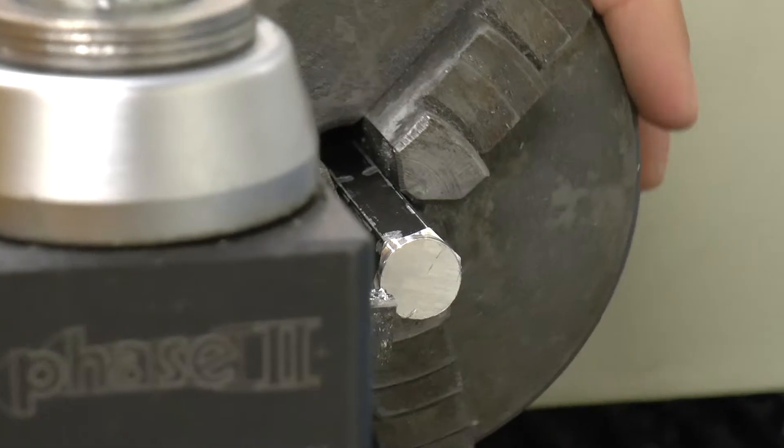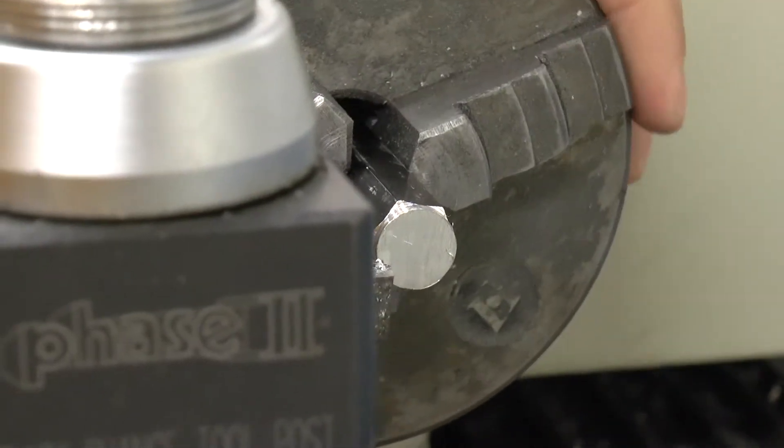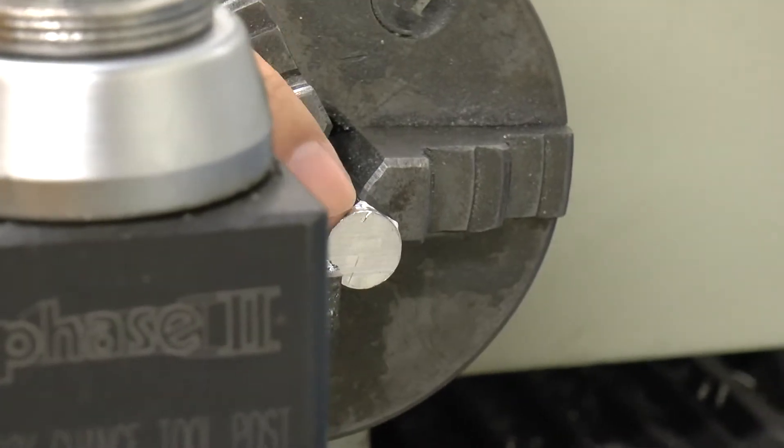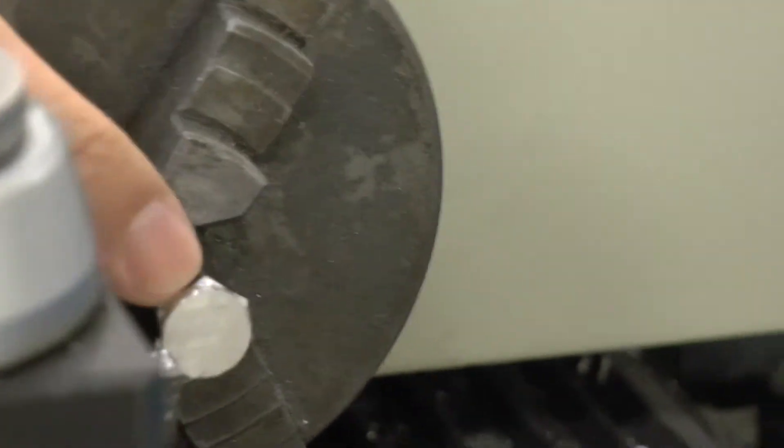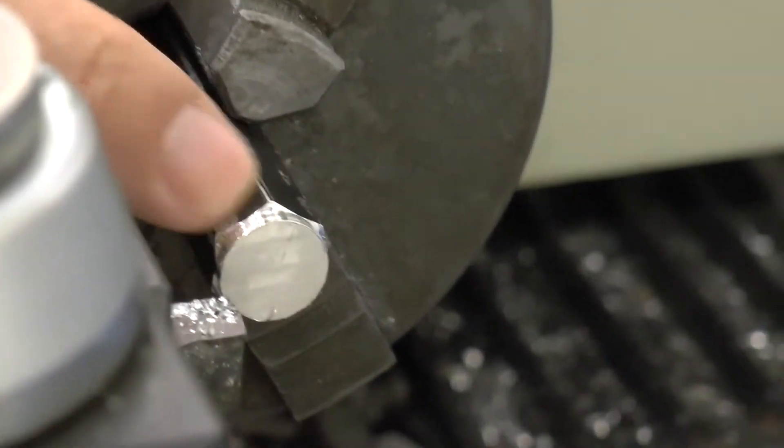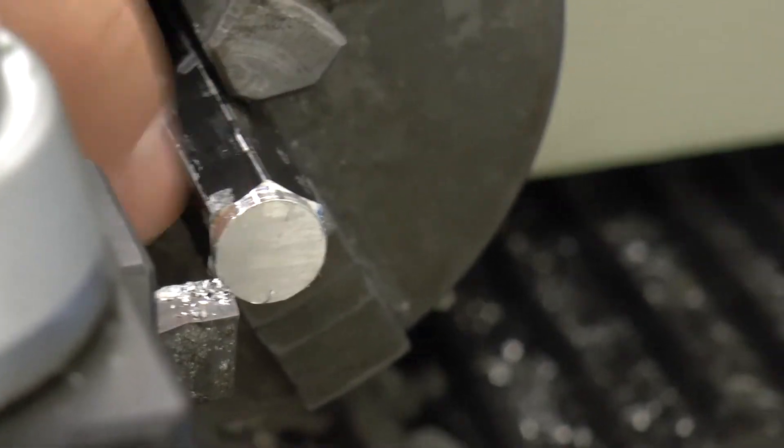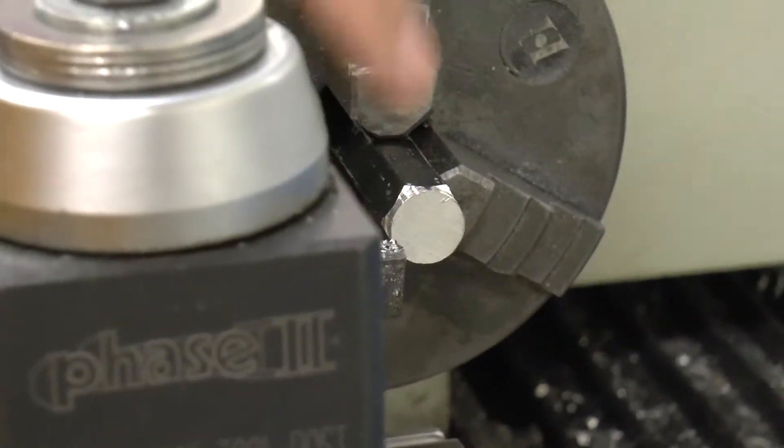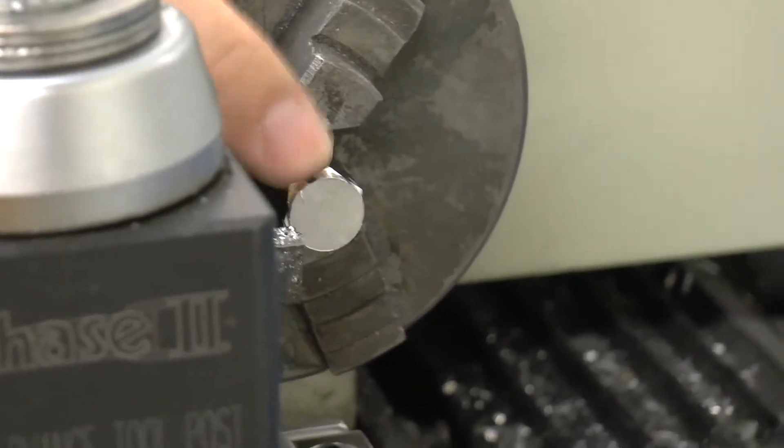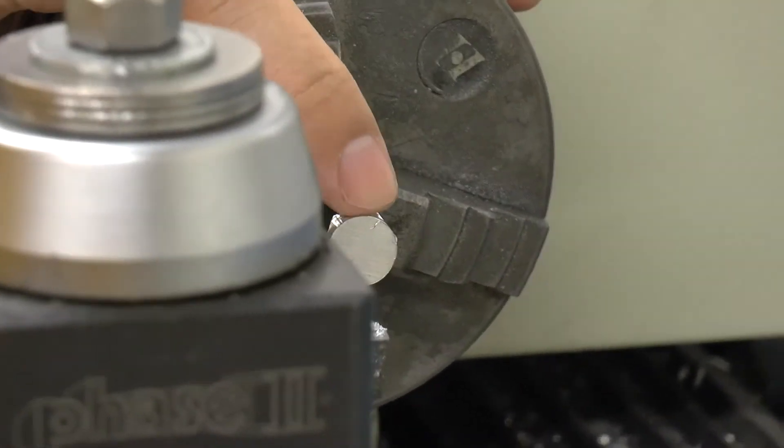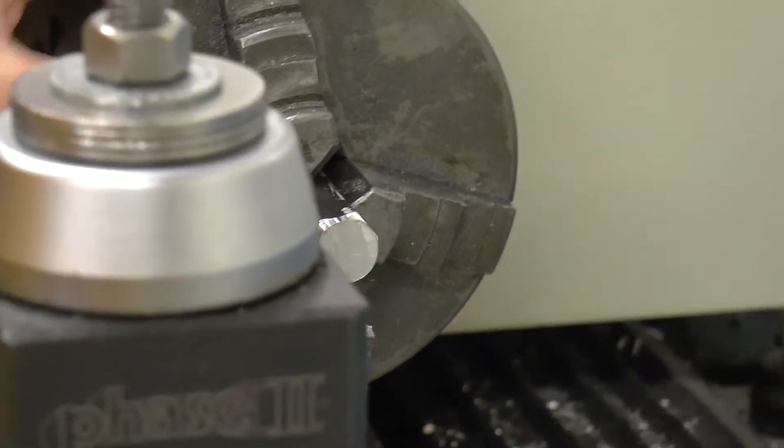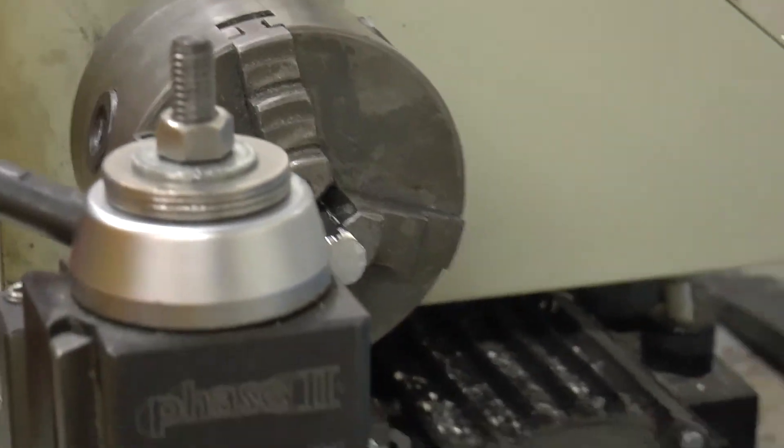So in this case, I actually went in fifteen, so that took off thirty thousandths off the diameter, which almost took it too far. You can see that on some of these flats, they're silver. We've taken off the anodized, the black anodized on the outside, and some of them are still black, which is good. So that's a good place to start for our plunge cut for the snap ring groove.